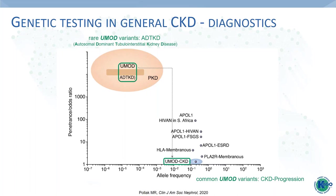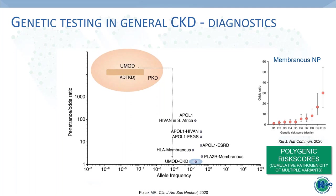On the x-axis you can see complex entities like membranous nephropathy and APOL1-associated kidney disease. APOL1-associated entities are special because their common variants have a significant effect size—quite uncommon for a risk allele. In clinical practice, polygenic risk scores are beginning to be established. For instance, in membranous nephropathy, a published risk score shows that multiple variants have cumulative pathogenicity: the more common variants a person accumulates, the higher the odds ratio.